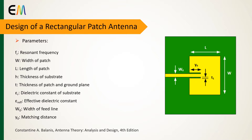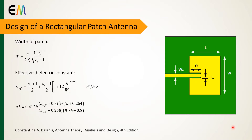The other parameters are the physical dimensions shown in the figure. After specification of εr, h, and fr, we start to calculate the other parameters. The width of the patch is obtained from this equation. The effective dielectric constant is computed using this relation, with the condition of width-to-height ratio greater than one.